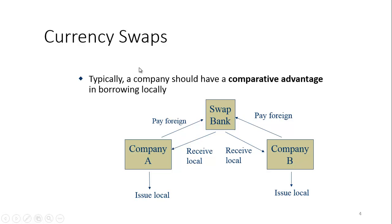Normally a currency swap takes place because a company has a comparative advantage borrowing locally. That means they can borrow at a relatively lower rate than their counterparty can in their local market.